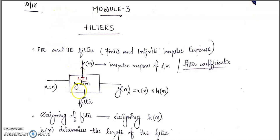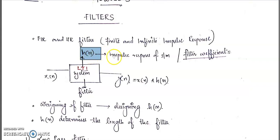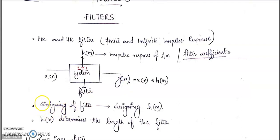If we consider an LTI system whose input is denoted as x(n) and its impulse response is denoted as h(n), the impulse response represents the filter coefficients. We can then predict the output y(n), which is given by x(n) convolved with h(n). If we know the input to the system and its impulse response, we can find the output y(n) = x(n) * h(n).